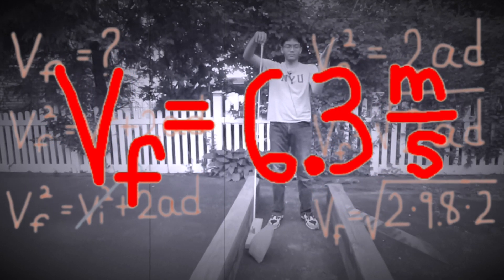So the mass doesn't matter for the final velocity. Now we're going to change the surface—not concrete anymore, but glass. One.